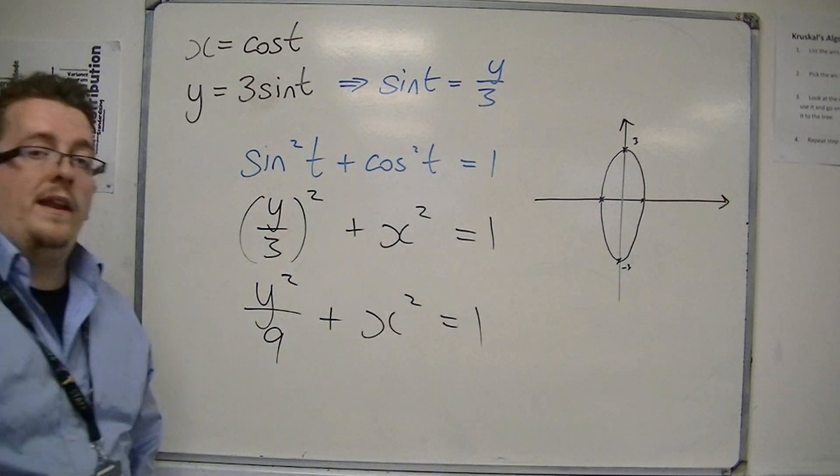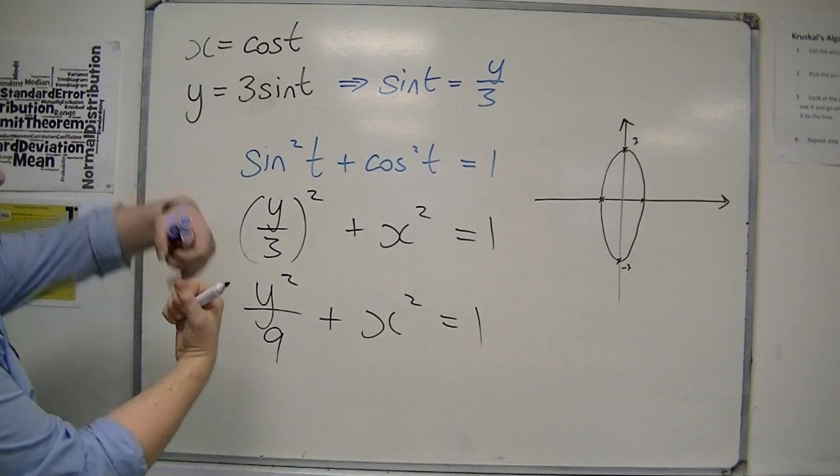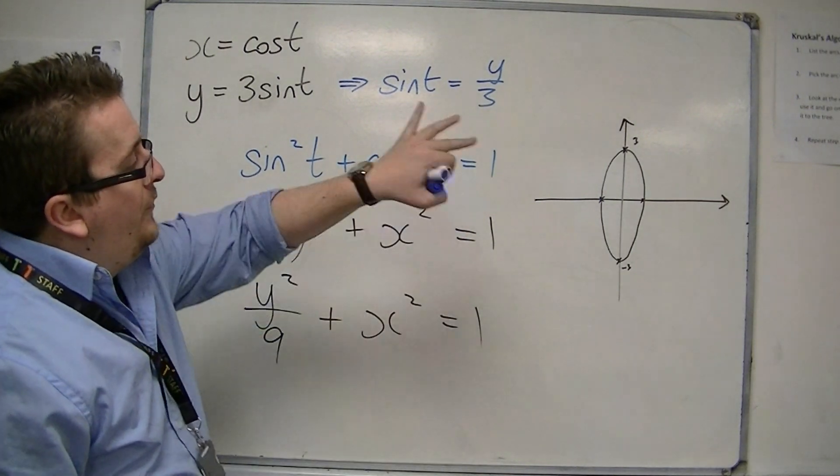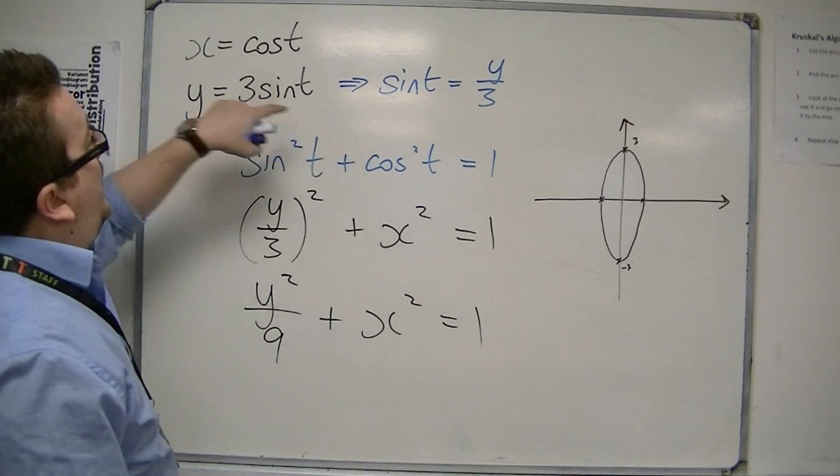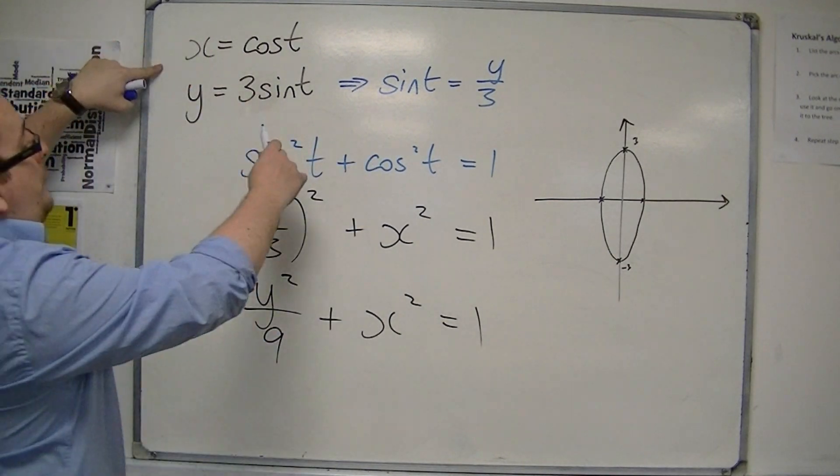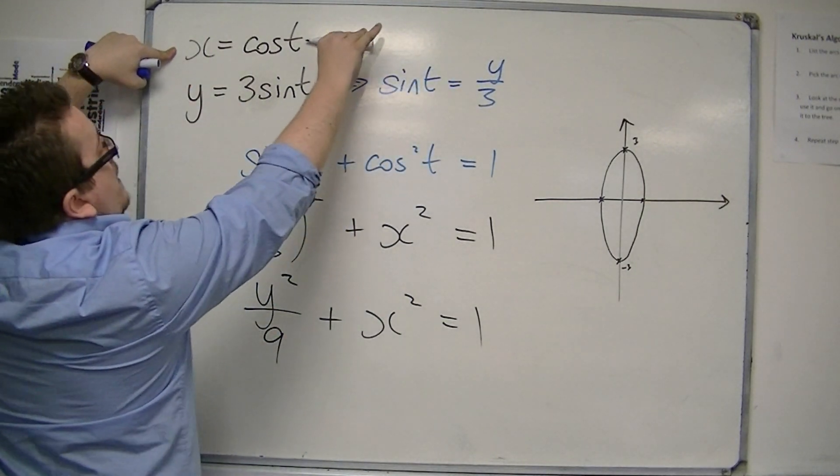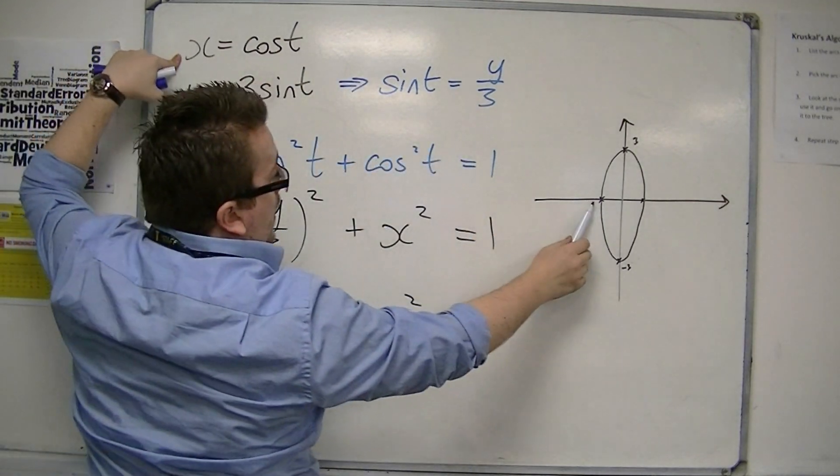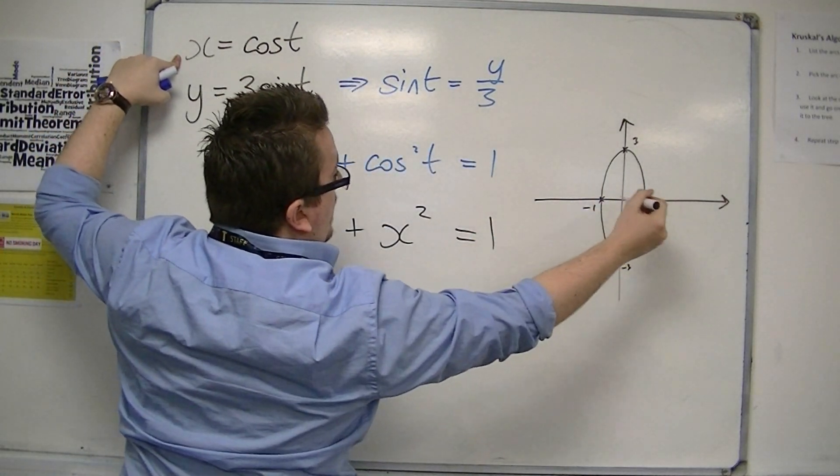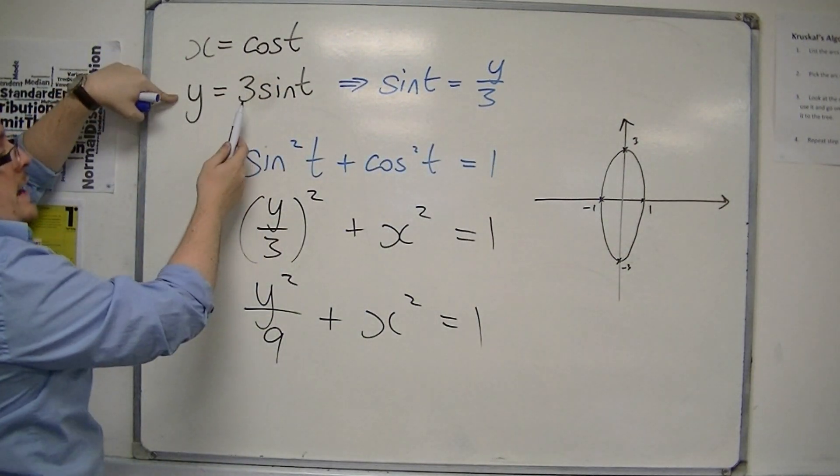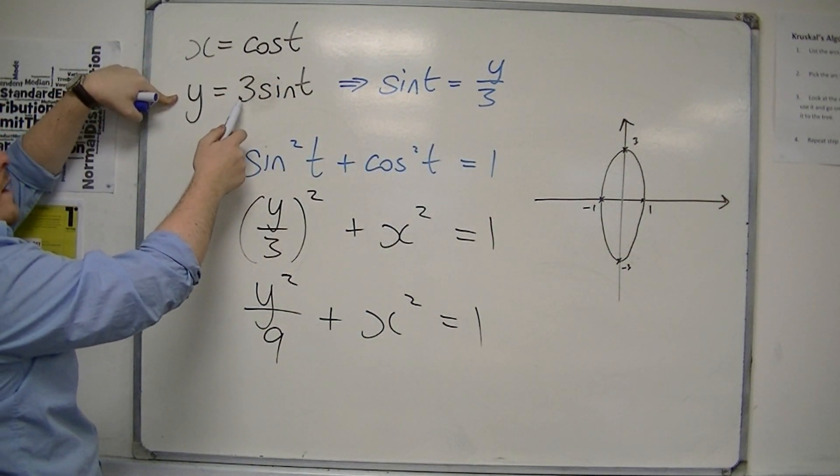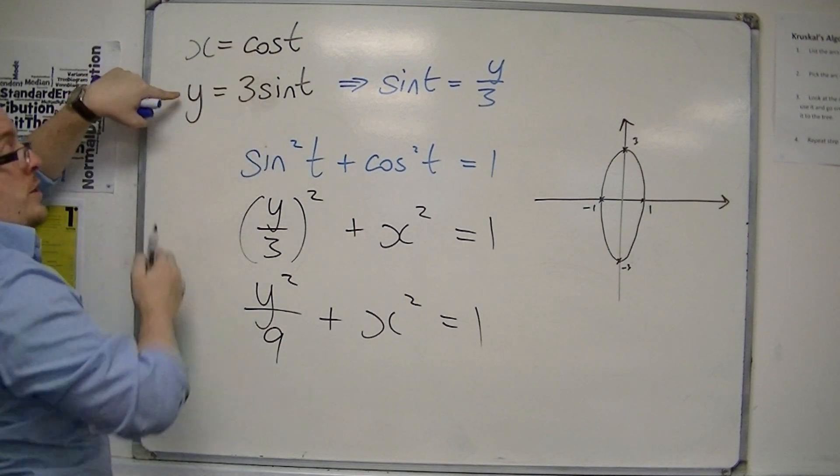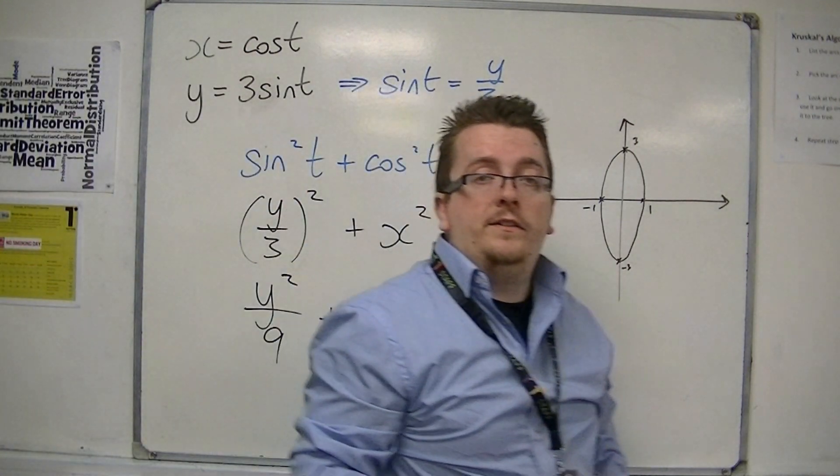Not a circle, but an ellipse. It's a circle that has been stretched, if you like. This is telling me it's going through 1 and minus 1 on the x-axis, and minus 3 and 3 on the y-axis. That's being identified by the coefficients of the cosine and sine that I'm given.